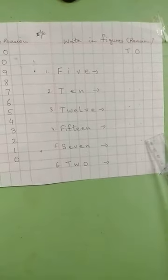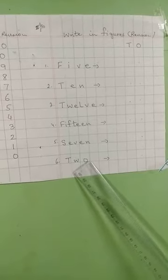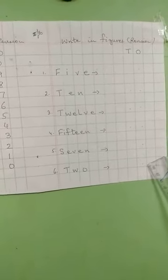Seven, you will write the number below 0. Two, you will write the number below 0.